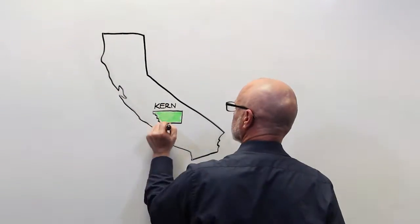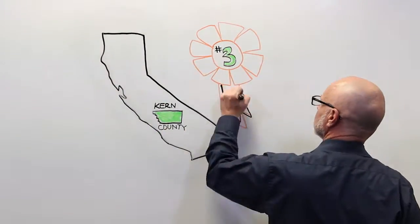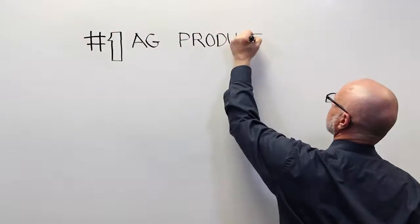Kern County is one of the largest counties in California, third to be exact, but we're first in a lot of other things.